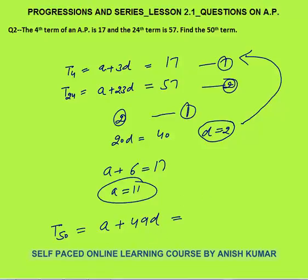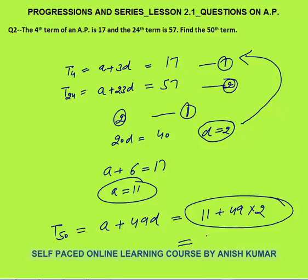Term 50 = a + 49d = 11 + 49 × 2. This kind of calculation you must be able to do verbally: 49 × 2 = 98, 98 + 11 = 109, so 109 is your final answer. I was saying that calculation speed must be very fast — you will improve it by practice. Try to solve this kind of question verbally without writing.